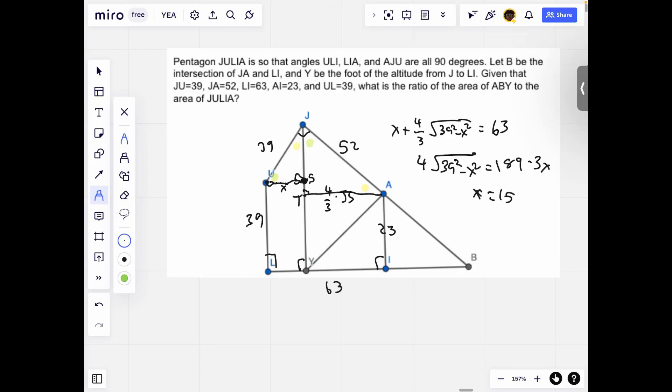So once X equals 15, we can erase all this. If we draw this, this is 15. Then by the Pythagorean theorem, this is 36. So then since this is 4 thirds of 36, then it's 48. And 15 plus 48 is 63, so that works.